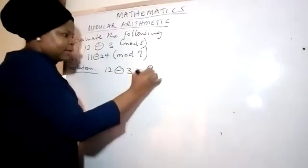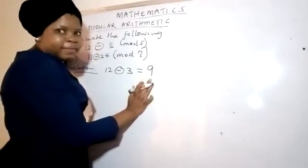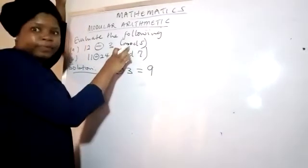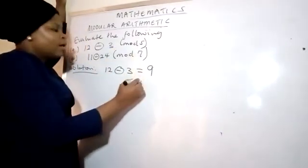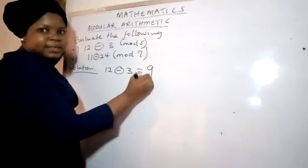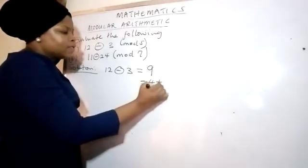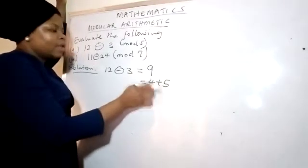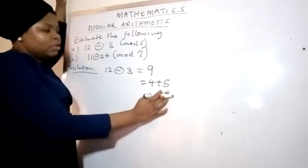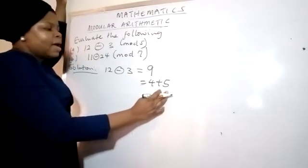But that 9 is not going to be my final answer because I'm working in mod 5. So I'm going to now say, how can I simplify this 9? I have 4 plus 5. What would I add to 5 that'll give me 9? That's 4 plus 5. So that means that 4...